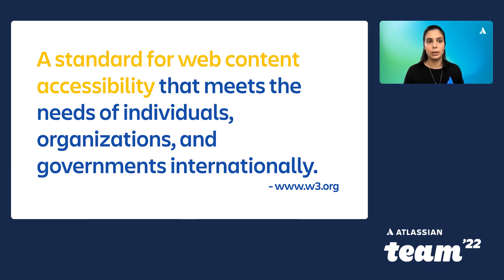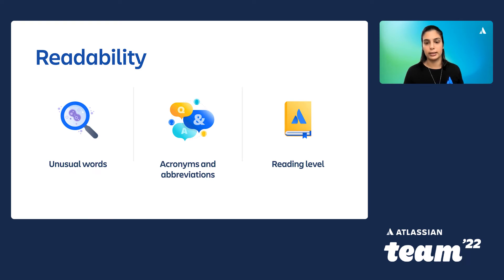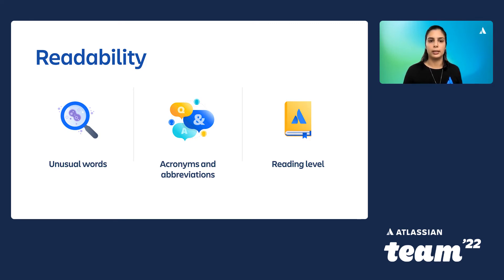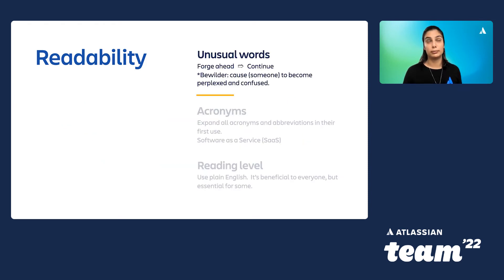But where do you start? Well, according to the WCAG, readability is actually an accessibility issue now — essentially how well people can read and understand your content. At Atlassian, this is everything from product messaging to support documentation. Content with a good readability level helps users know what to do, making it more inclusive for people who may have a lower comprehension level. To achieve an appropriate level of readability, start by looking at unusual words, acronyms and abbreviations, and the reading level of your content. Unusual words can be bewildering — avoid them where possible, and when you do use one, explain it by providing a glossary.